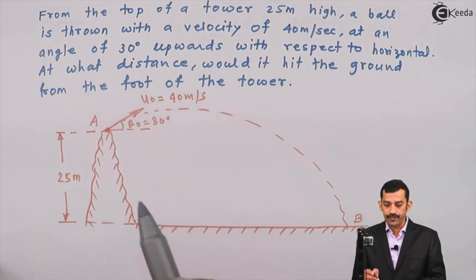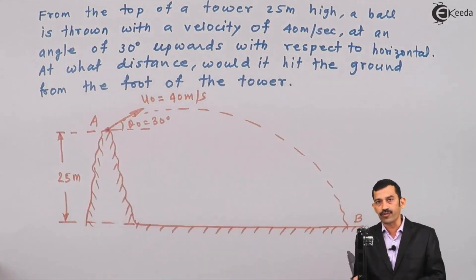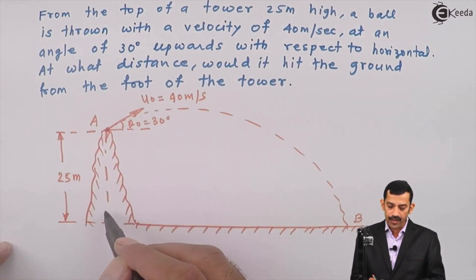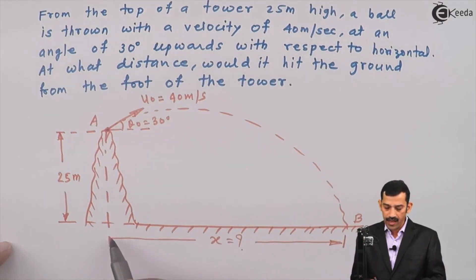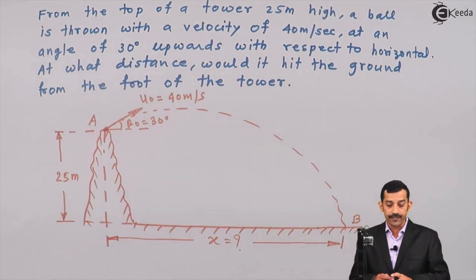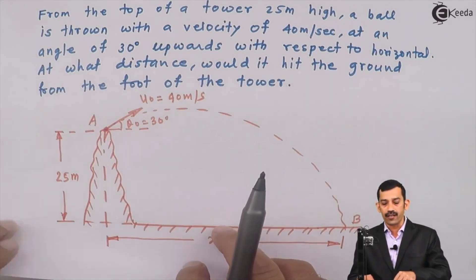Considering sign convention: the initial position is A and the final position is B. Since B is below A, y is negative — that means y = −25 meters. The horizontal distance x is unknown. Since u₀, θ₀, and y are all known, we will use the equation of path, which is expressed in terms of x, y, u₀, and θ₀.